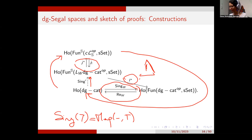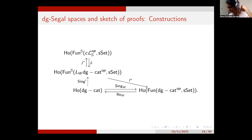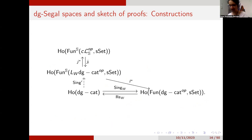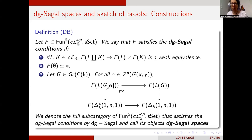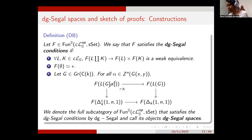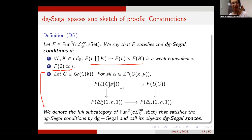Now we have this functor, and the next question is: what is the image of this functor? For that, we are going to define DG Segal spaces. If we take a functor in this category, we say that F satisfies the DG Segal conditions if it sends finite coproducts to products, if it sends the initial object to a point, and if it satisfies a further small condition that I will explain momentarily.